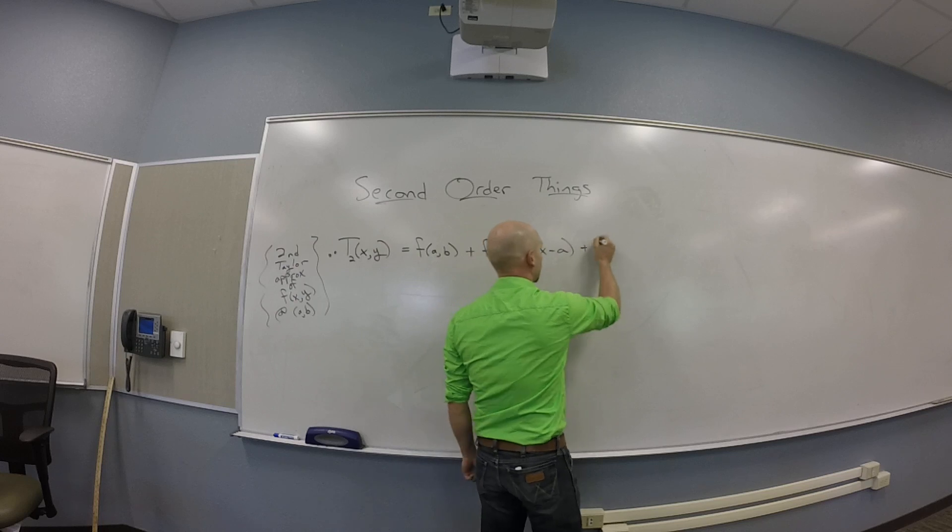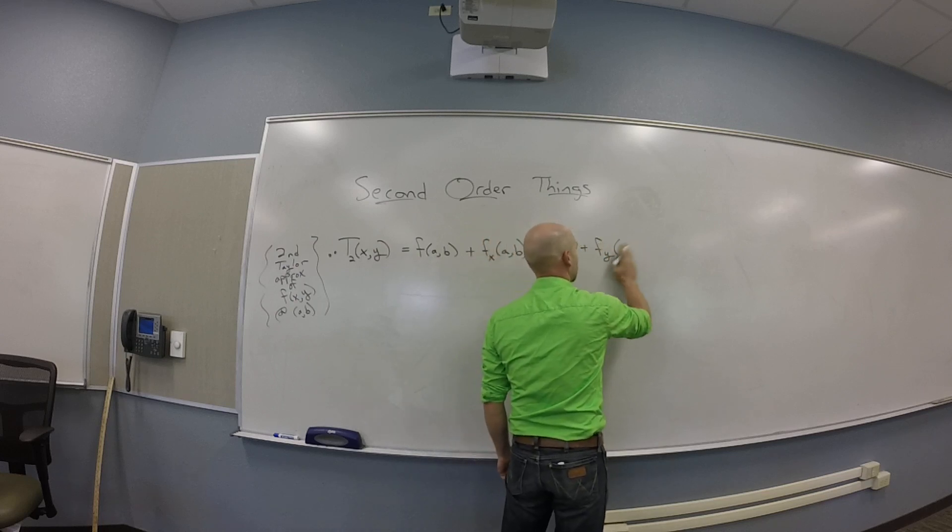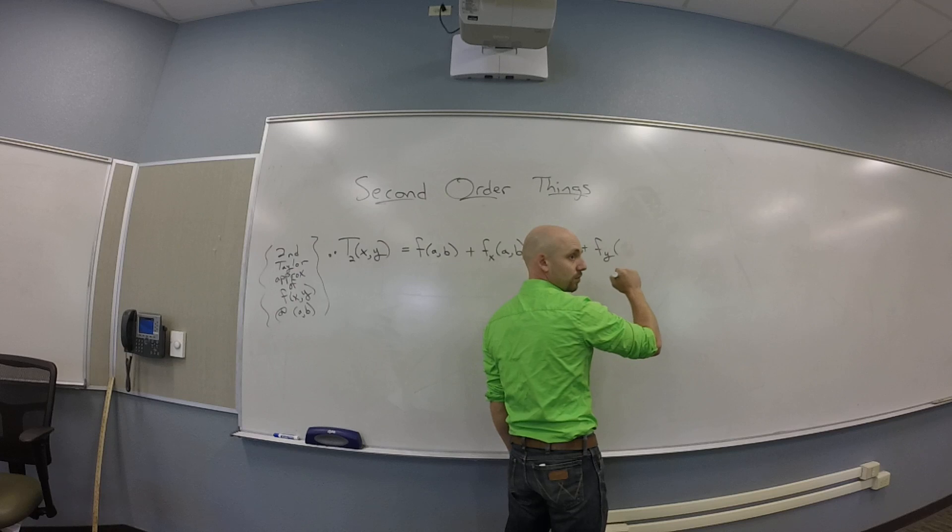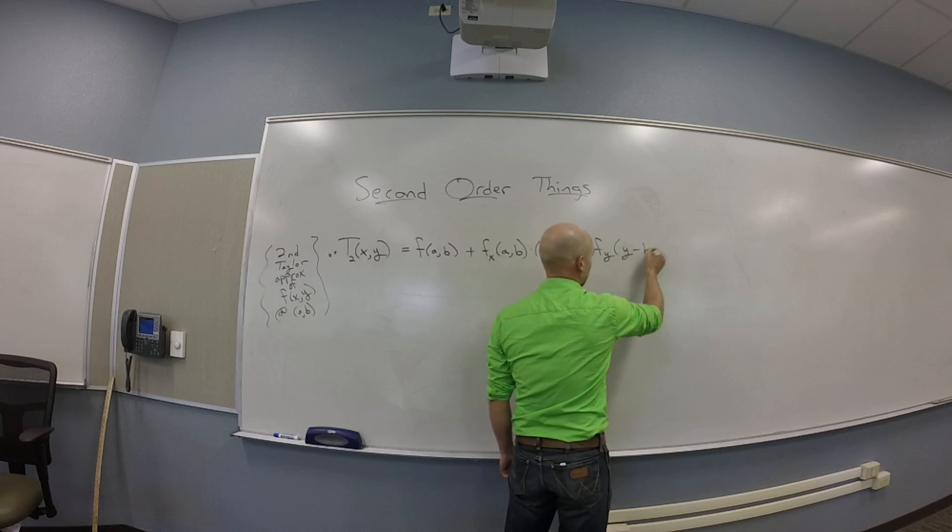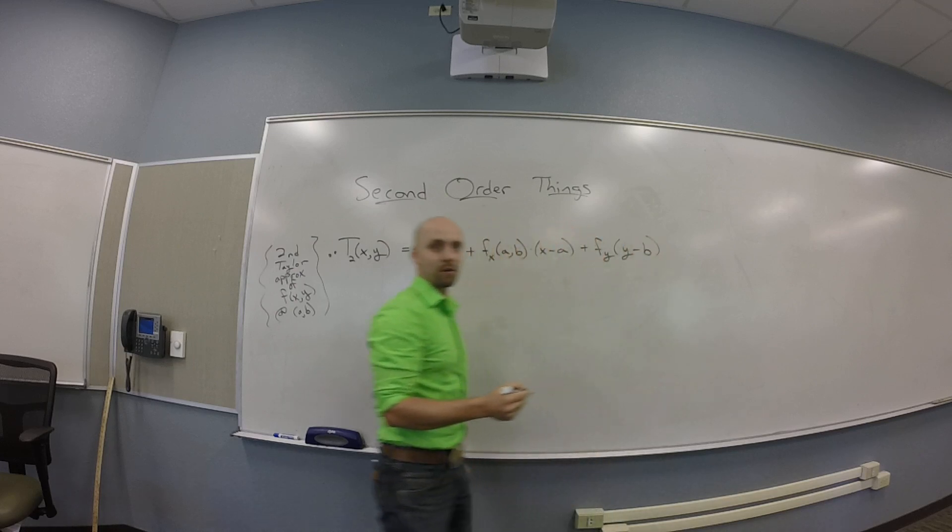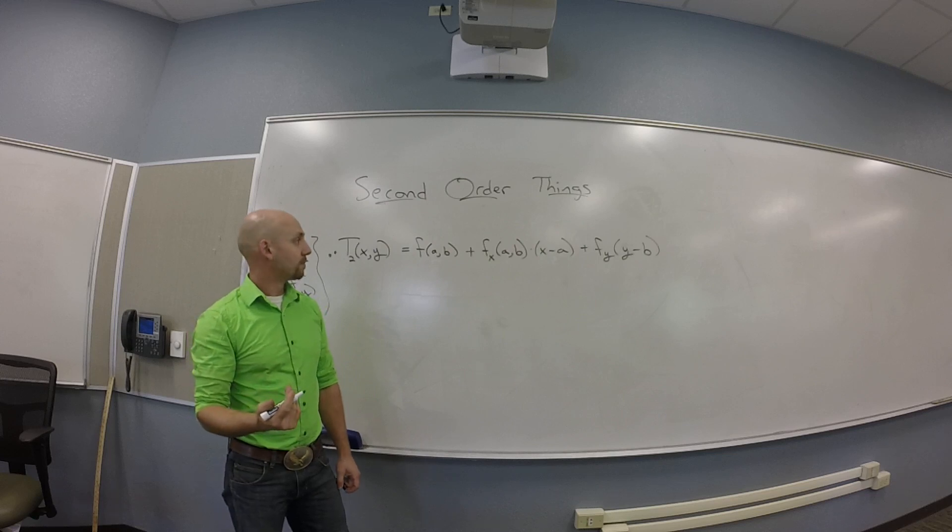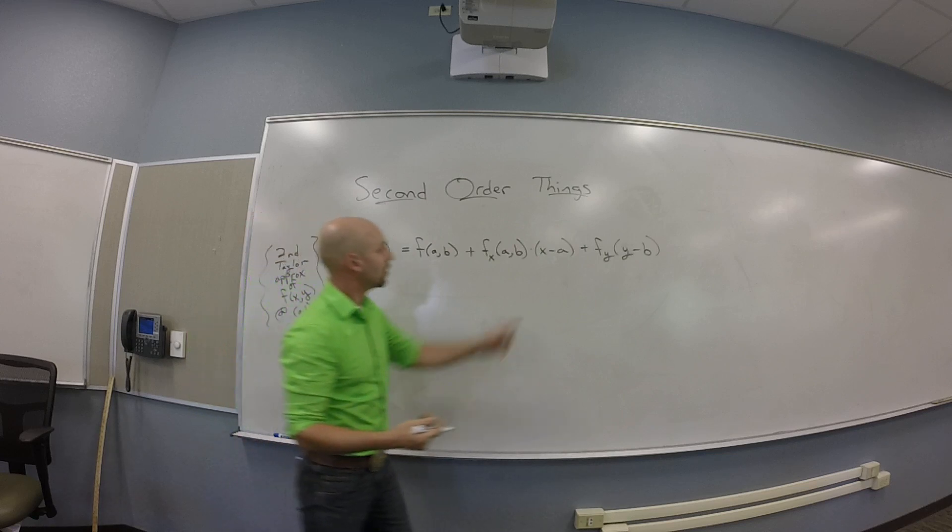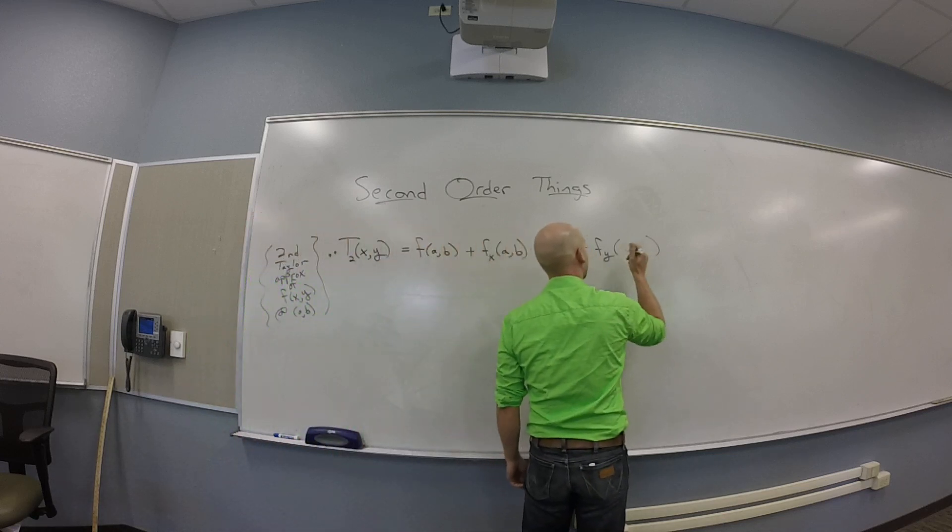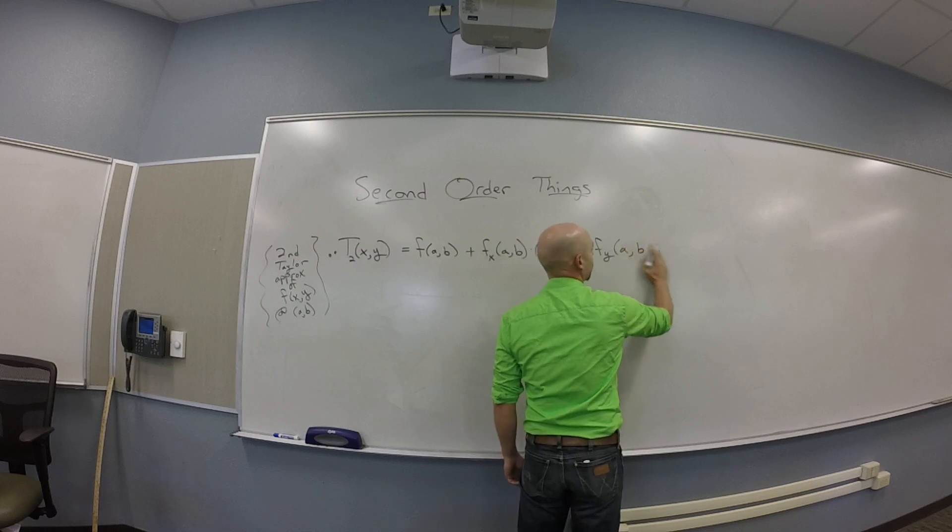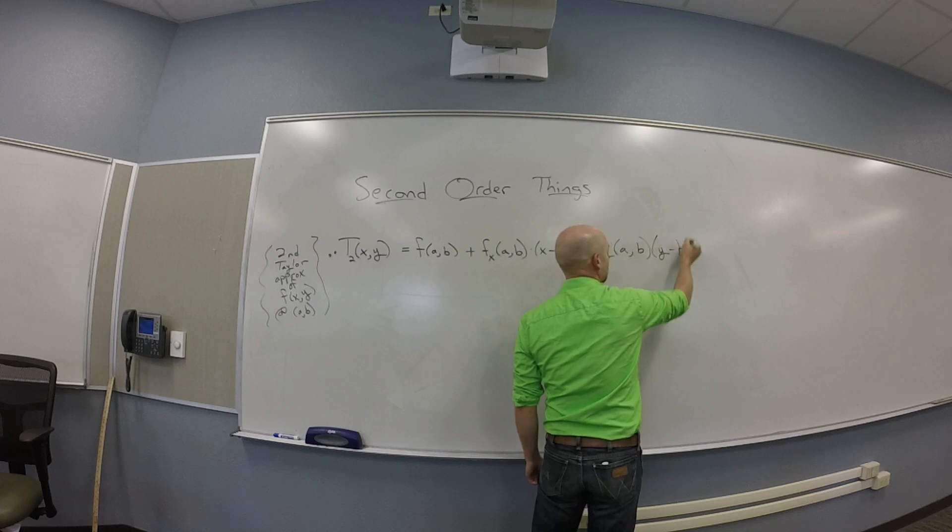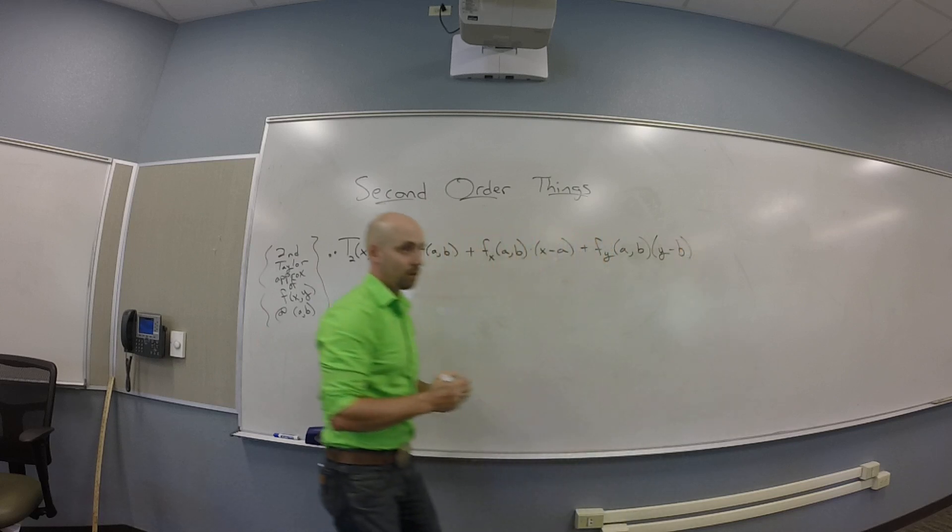And then we could add the Y slope times... Don't we have to start with the FY AB then Y minus B? Oh, thank you. Yeah, that's just bad notation on my part. We should evaluate FY at AB and then multiply by Y minus B.